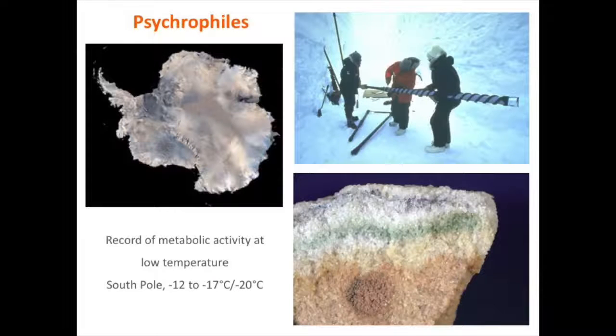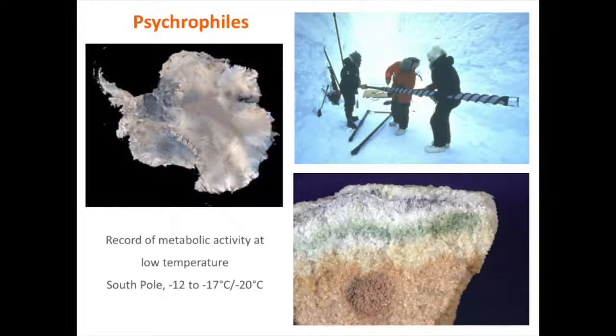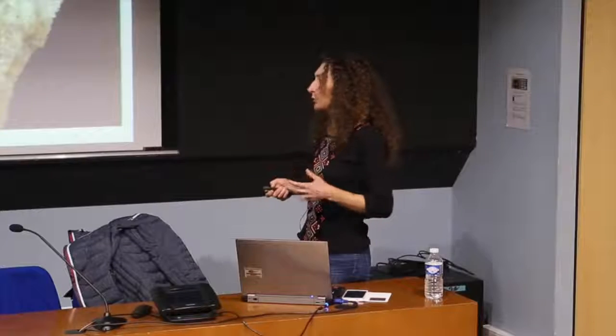We have explored organisms that grow at very high temperatures, and on the opposite side of the temperature gradient we have organisms that live at very low temperatures — called psychrophiles. You find them in environments like Antarctica. The record of metabolic activity at very low temperature has been registered at the South Pole at somewhere between minus 12 and minus 17 degrees, with some authors arguing for minus 20.